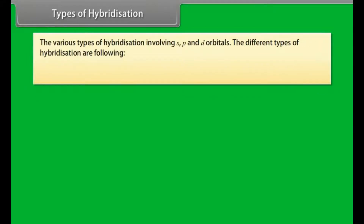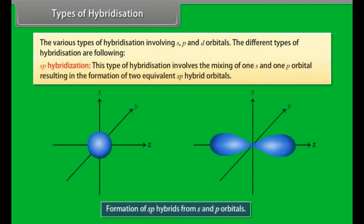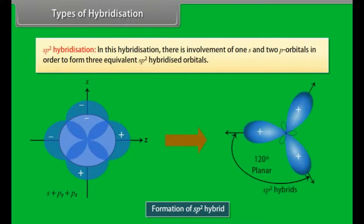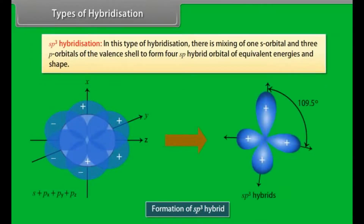The various types of hybridization involve S, P, and D orbitals. SP hybridization involves the mixing of one S and one P orbital, resulting in two equivalent SP hybrid orbitals. SP2 hybridization involves one S and two P orbitals to form three equivalent SP2 hybridized orbitals. SP3 hybridization involves one S orbital and three P orbitals of the valence shell to form four SP3 hybrid orbitals of equivalent energies and shape.